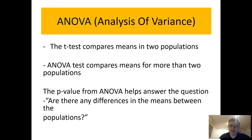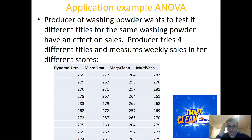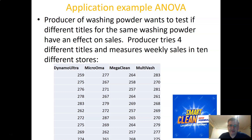Here is an example. Let's say we have a producer of washing powder who wants to test if different titles for the same washing powder have an effect on sales. The producer tries four different titles and measures weekly sales in ten different stores — one week per title — counting how many boxes were sold. The four names are: Dynamo Ultra, Micro Oma, Mega Clean, and Multi Wash.